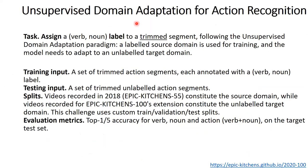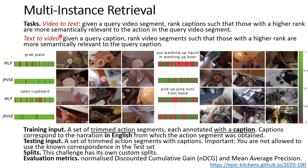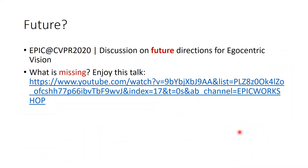Another task is multi-instance retrieval from the EPIC-Kitchens dataset. This is basically video-to-text and text-to-video based. Training data has a trimmed action segment, each annotated with a caption. For future directions on egocentric vision, I recommend Googling 'EPIC at CVPR 2020' — you'll find a 30-minute video discussion on future directions. Workshops are very important because they have scope to discuss future directions, open discussions, and what is missing.